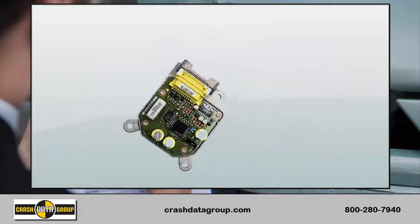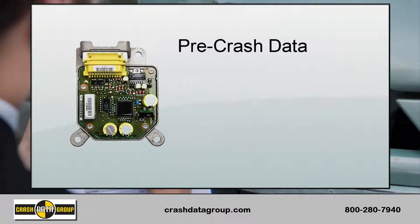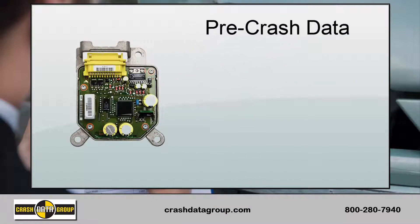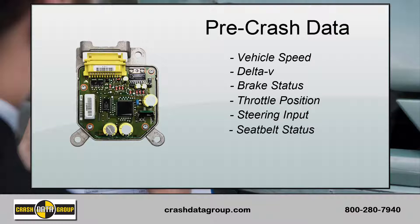So what information is contained in an EDR? Most late model vehicles on the road today contain at least five seconds of pre-crash data that includes vehicle speed, delta V, brake status, throttle position, steering input, seat belt status, occupant detection, and more.